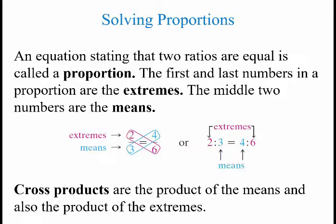An equation stating that two ratios are equal is called a proportion. The first and last numbers in the proportion are the extremes, and the middle two numbers are the means. For example, 2 to 3 equals 4 to 6 — the extremes are 2 and 6, the means are 3 and 4. The cross products are the products of the means and the products of the extremes: 3 times 4 equals 12, and 2 times 6 also equals 12, so the cross products are equal.